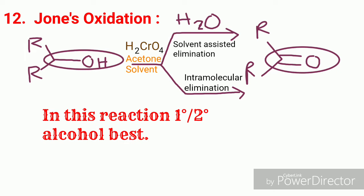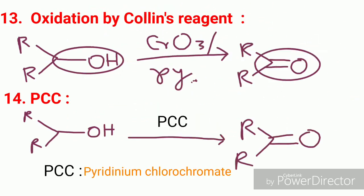The next reaction is modified Jones oxidation, that is oxidation by Collins reagent. Here the CHOH group is also converted to a keto group, just like Jones oxidation. Next is PCC, that is pyridinium chlorochromate, as a reagent. This also does the same as the former two — Jones oxidation and Collins reagent oxidation.